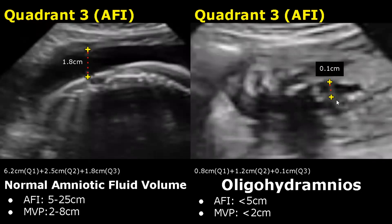In the third quadrant, the normal measurement is 1.8 cm and we can see a decent amount of Amniotic Fluid. Whereas in the case of Oligohydramnios, we see very little fluid, with the third quadrant measurement being only 0.1 cm.